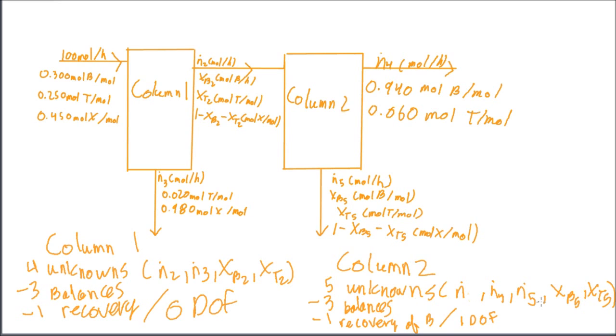Sorry about the writing. It's a work in progress, if you will. On top of that, though, we do know, of course, we have three chemical species again. So, we do have three balances. And we do have a specification given in the description of the question about the recovery of B. So, we have four unknowns we can scrap off. So, now we're left with one degree of freedom in column two.